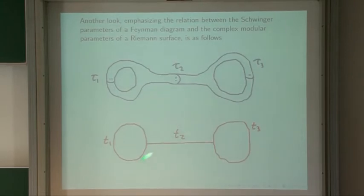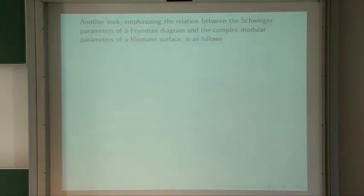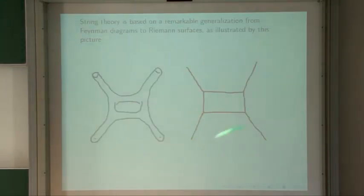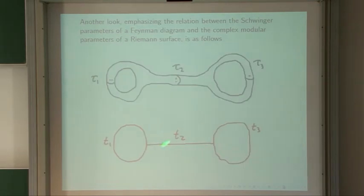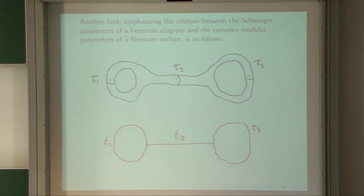Here's another look at the same thing. In this case I've drawn a graph for a vacuum amplitude with only internal particles. I've labeled each line in the graph by a positive real number, which you can think of as the length of that line. The t's are called Schwinger parameters in the theory of Feynman diagrams, and you can think of them as defining a Riemann metric on the graph.